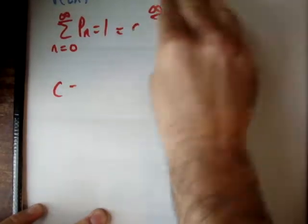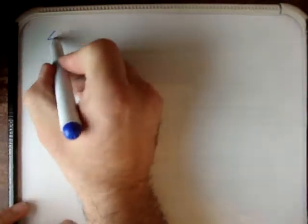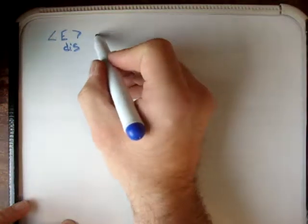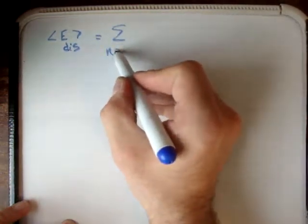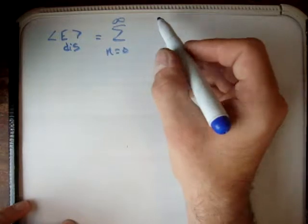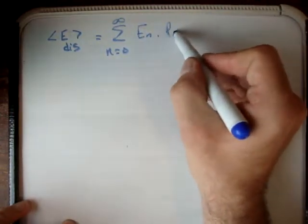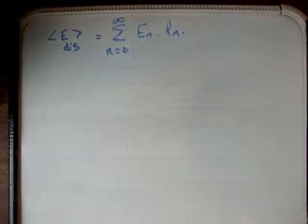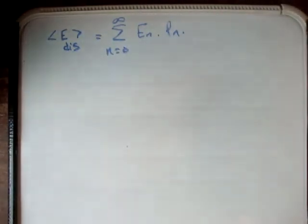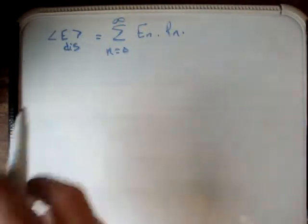Now we have the probability — where do we go from here? The next thing we need to do is work out the average energy. The average energy for the discrete case is equal to the sum from n equals 0 to infinity of the energy levels multiplied by the probability of being at each particular energy level, adding all those probabilities up. That gives us our average energy using a discrete or quantized approach.